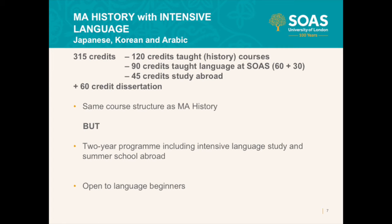All of these intensive language programs are open to students from any language ability — you don't need to know any Japanese, Korean, or Arabic beforehand. If you do know these languages, you're welcome to join; placement exams put you into classes based on your ability. These language classes are taught alongside the BA language learning programs at SOAS, so it's not just an MA history class. Students on these programs say it's been a great way to get to know more people and build networks with others interested in the same areas.